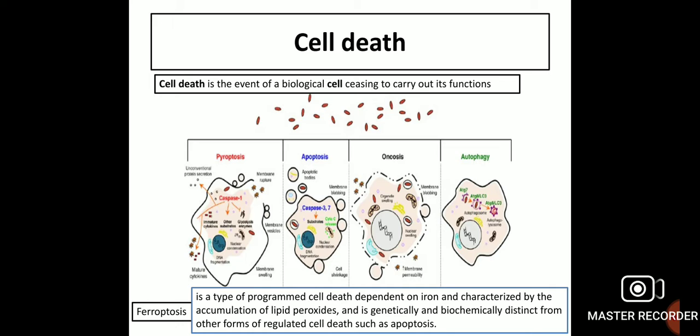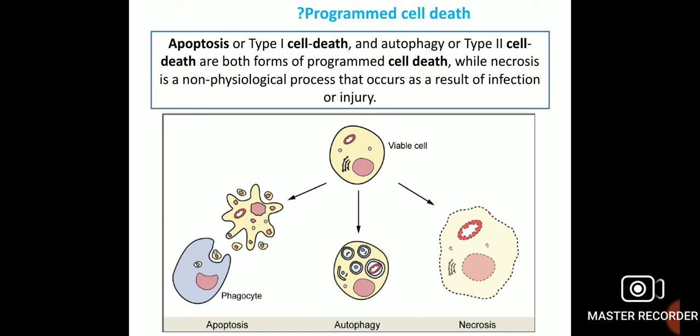Apoptosis, also called Type 1 cell death, and autophagy, also called Type 2 cell death, are both forms of programmed cell death. Necrosis, by contrast, is a non-physiological process that occurs as a result of infection or injury.